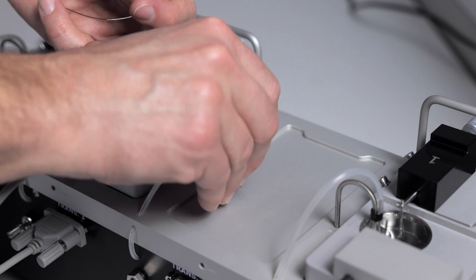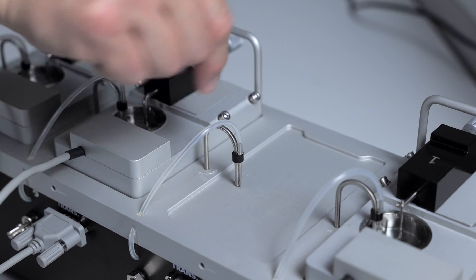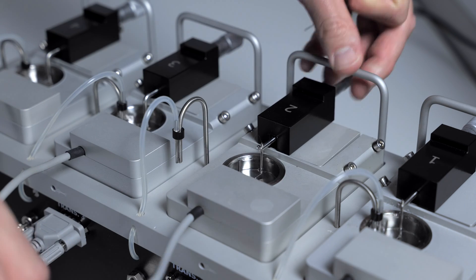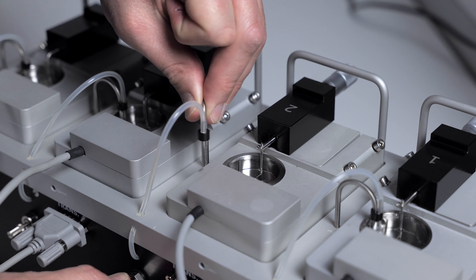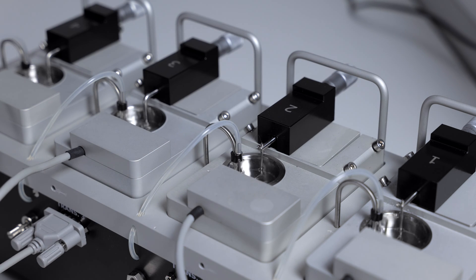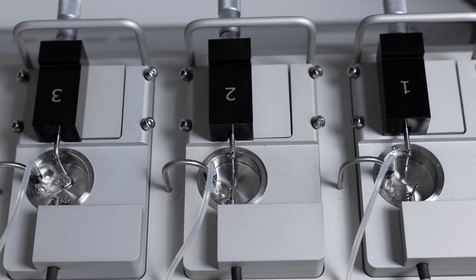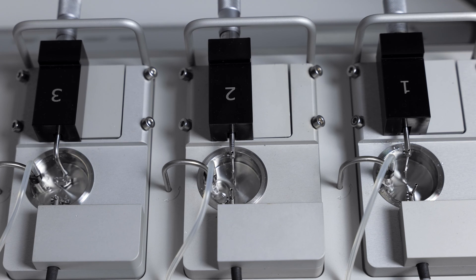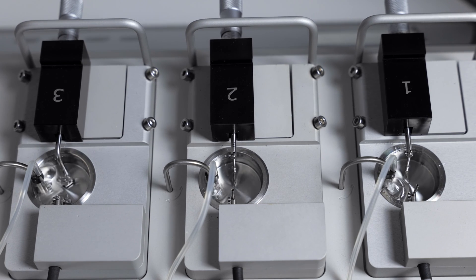Then you can reattach the silicone tubing. Check the chamber. Check for bubbling. At this point, all four chambers should be bubbling. If it is not, please contact your DMT representative for additional troubleshooting.